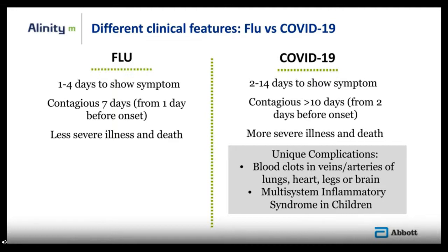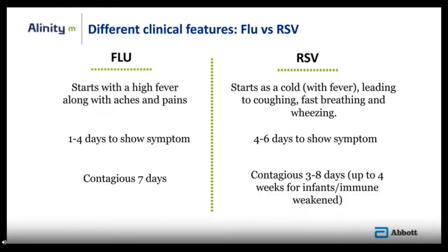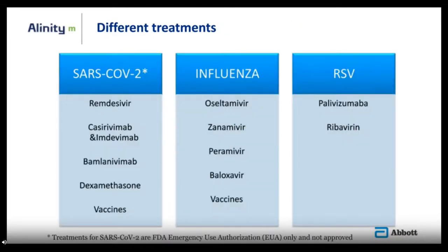COVID-19 also has unique complications including blood clots in veins, arteries of the lung, heart, legs, or brain, and multi-system inflammatory syndrome in children. Comparing flu versus RSV: flu starts with high fever, aches and pain, while RSV starts with a cold-like presentation with fever leading to coughing and wheezing. Flu takes 1–4 days to show symptoms, RSV takes 4–6 days. Flu is contagious for 7 days, RSV for 3 to 8 days — longer for infants or immunocompromised individuals. Treatment for SARS-CoV-2, influenza, and RSV also differs significantly.